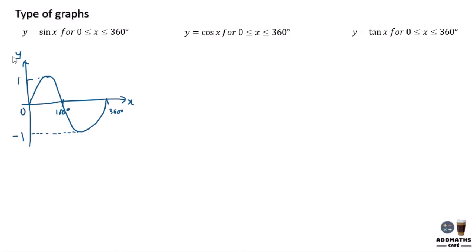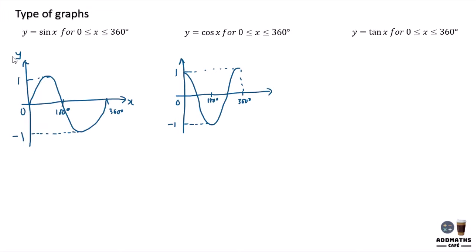Same goes to cos x. It will have to start not from 0 but from 1, and then goes down and goes up at the end. The maximum height will be 1, minimum will be negative 1. Half of it will be 180 degrees, and the last part will be 360 degrees. Remember to write 0, the y-axis label, and x label.